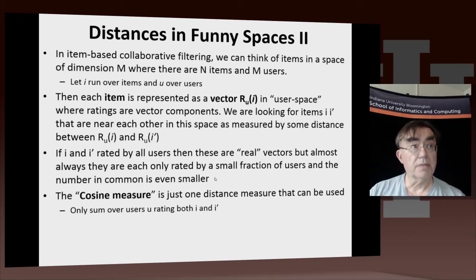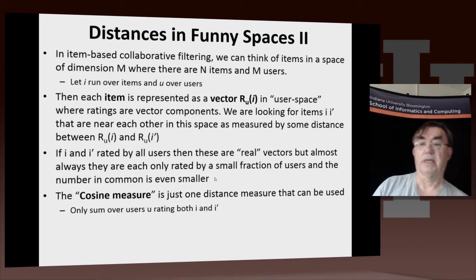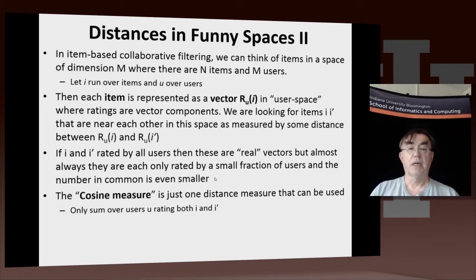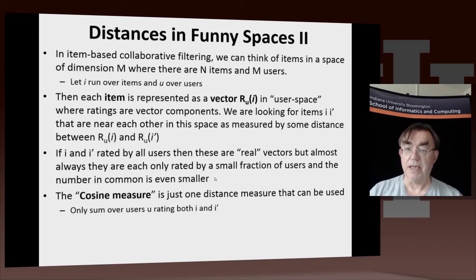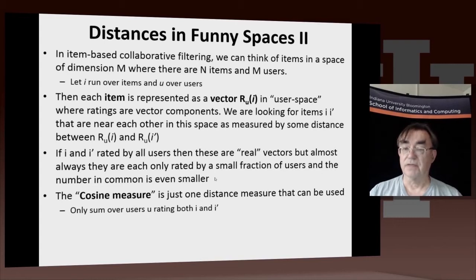You can also look at this problem in an alternative way. This is the difference between user-based and item-based analyses. In the item-based approach, we think of the items as the points, and the space has dimension m when there are m users. This is the dual of the previous way of looking at it. Now every item is represented by a vector in user space, and the components of that vector are the ratings of the particular user, because every user has a dimension in that space. Again, this is very sparse — a given item is only going to be rated by a few of the users, although some items are rated by many users.